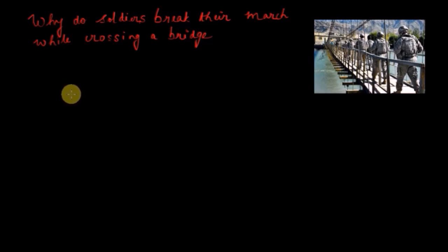In 1850, there was a suspension bridge called Angers Bridge across the river Maine in France. One night, a battalion of 200 soldiers was marching on the bridge. Suddenly the bridge collapsed and all 200 soldiers died. Since that incident, no battalion marches when they move on a bridge.